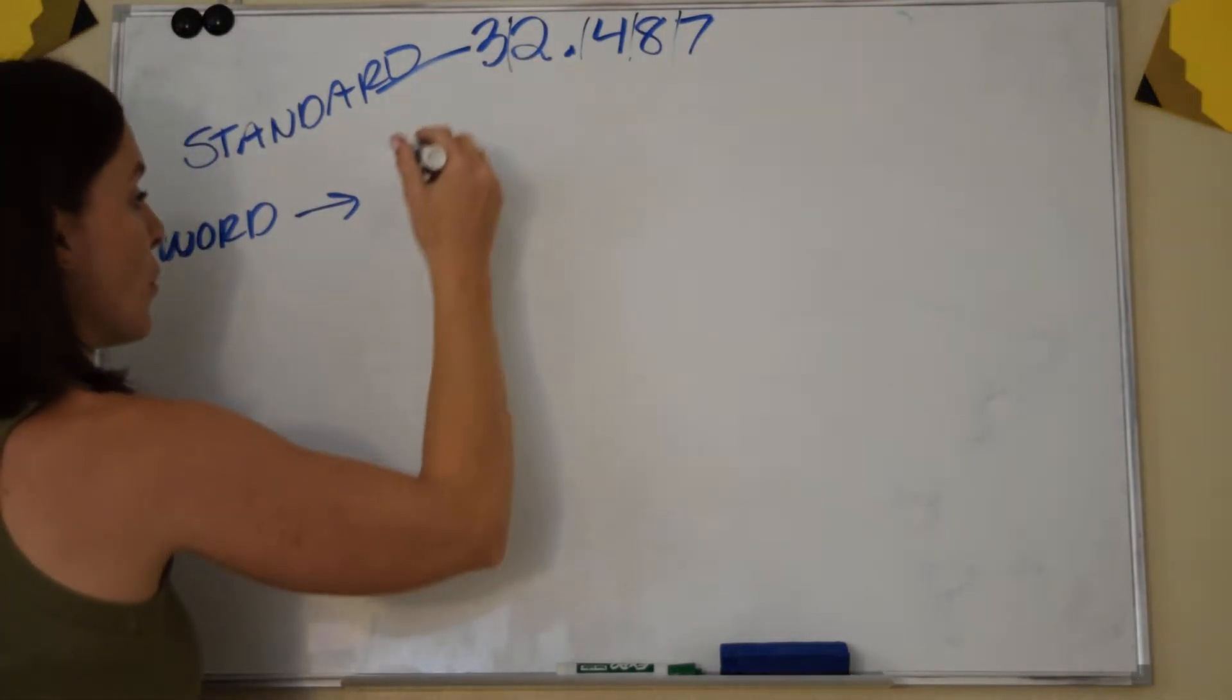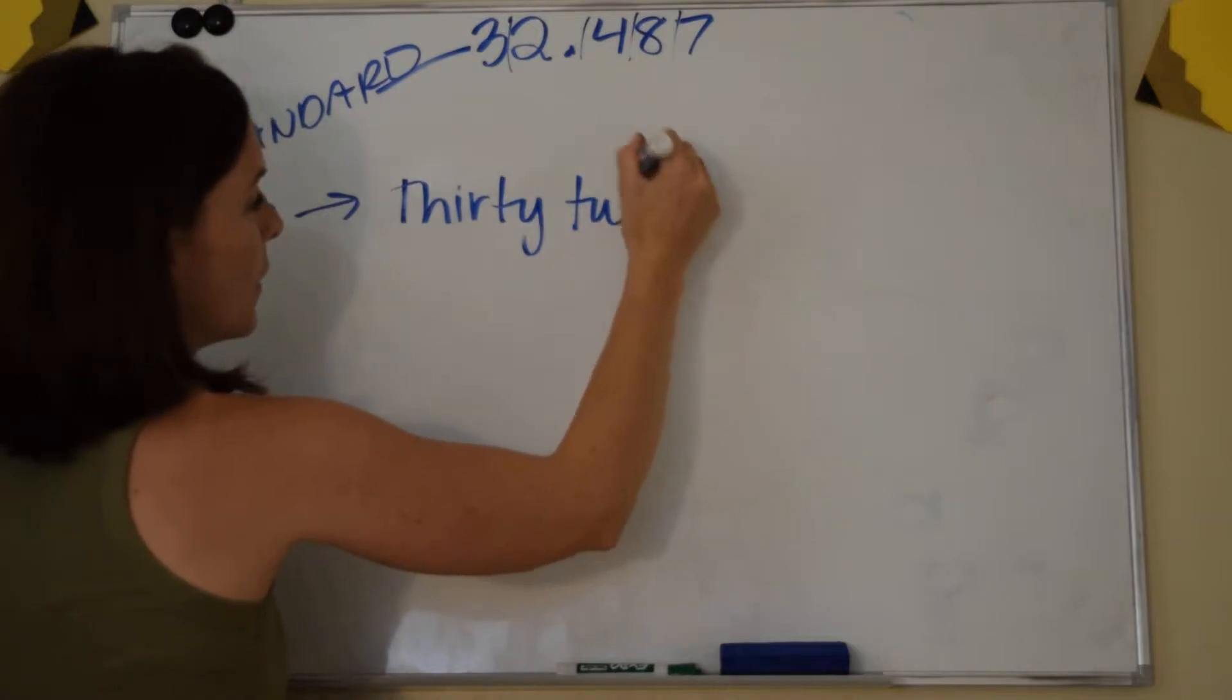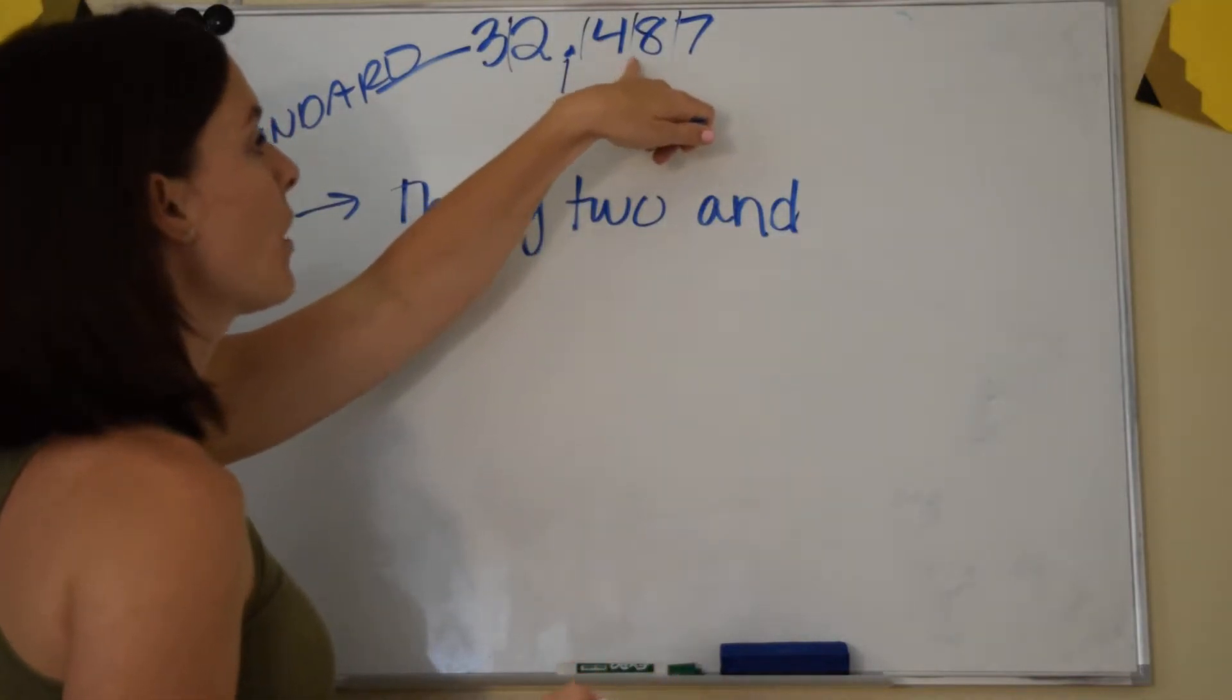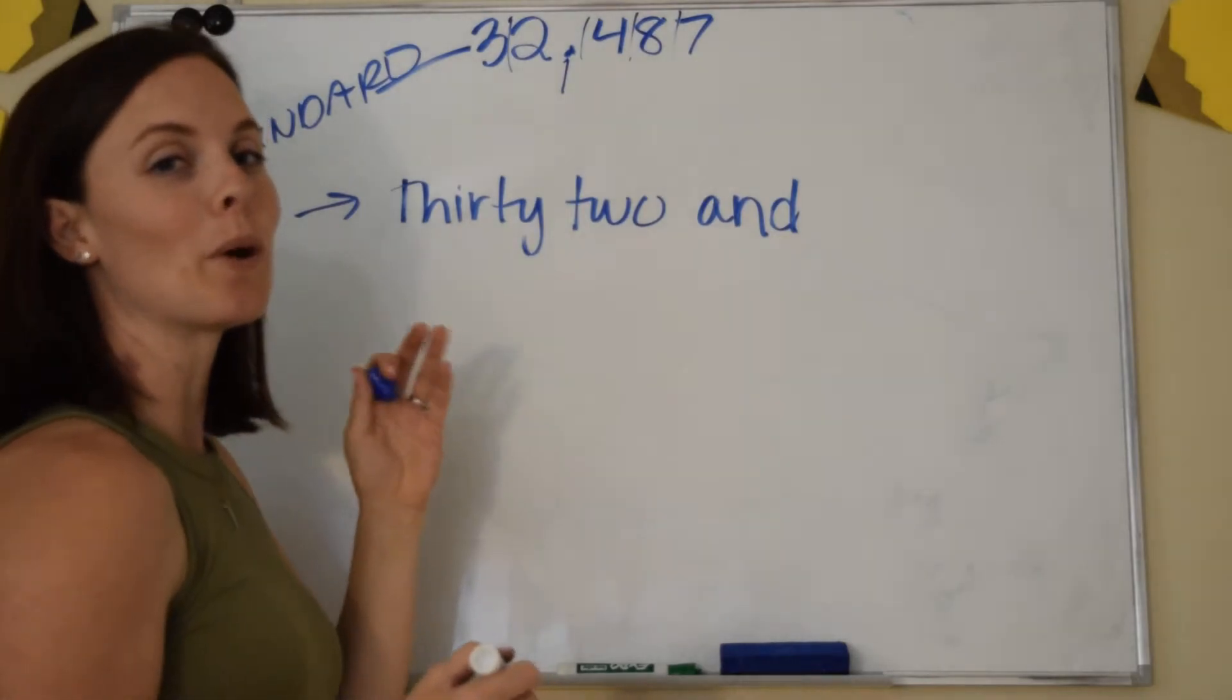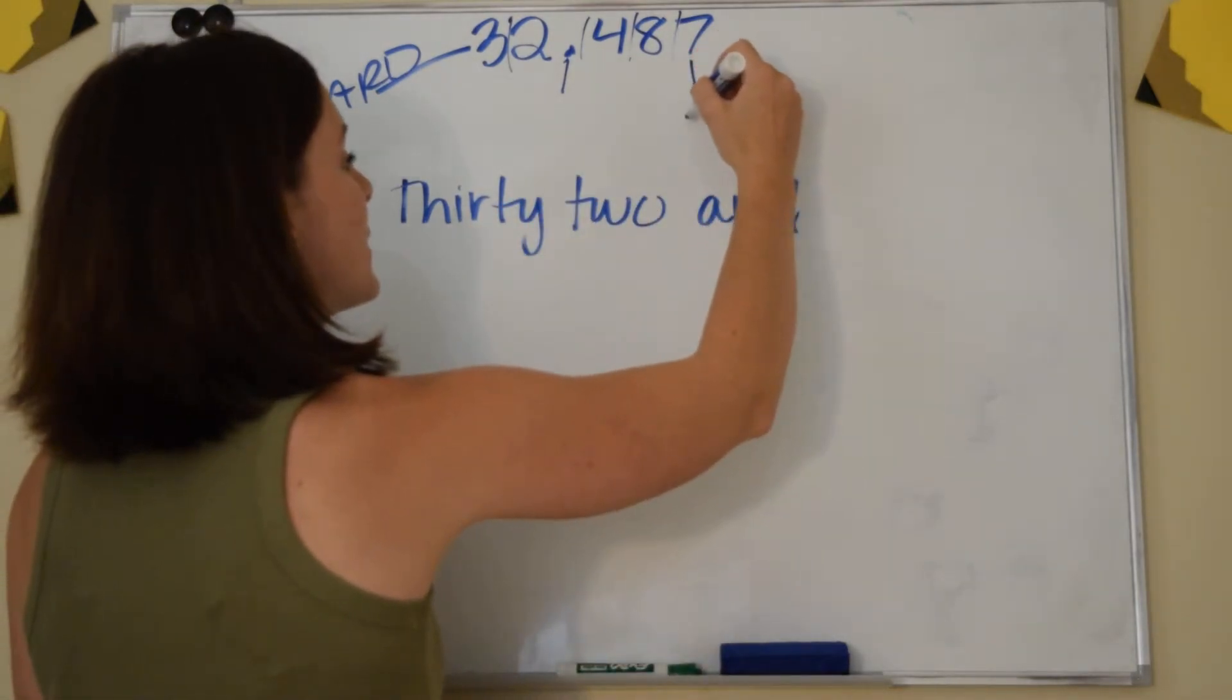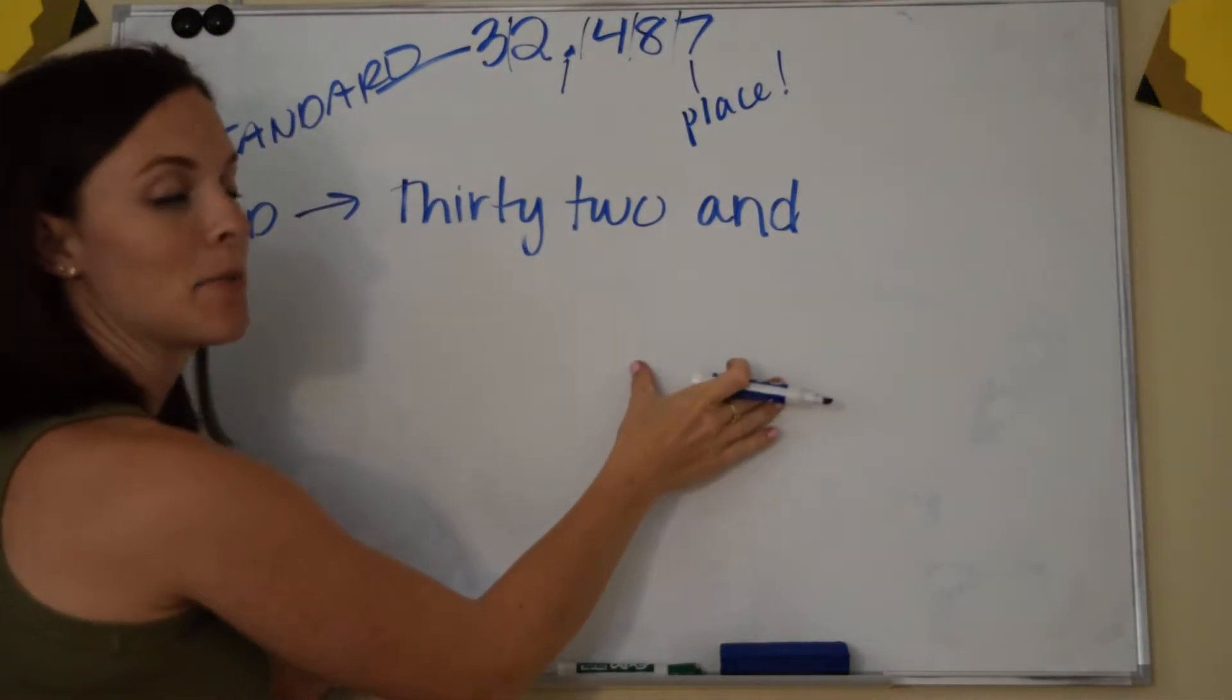So my first part is 32. The decimal is always represented with the word AND. 487. Now don't forget, when we are working with decimals and numbers to the right of the decimal, you have to identify the last digit and what place it's in. 487, okay? And that word has to be added.